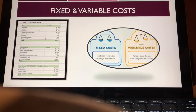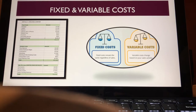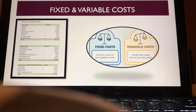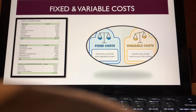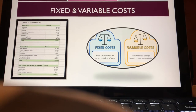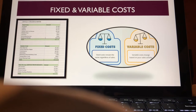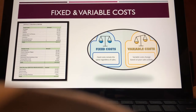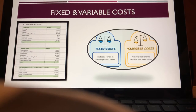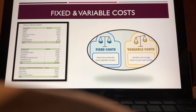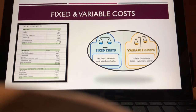Fixed and variable costs are defined as fixed costs remaining the same regardless of sales, and variable costs changing based on your sales activity. Some examples for the new training facility are mortgage, utilities, and salaries as fixed costs, and then regarding variable costs: raw materials, commissions, advertising, transportation, and possible event planning costs.